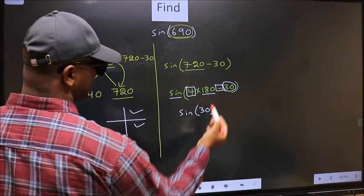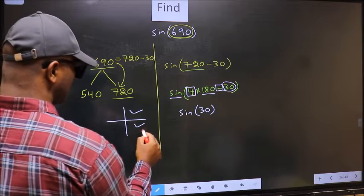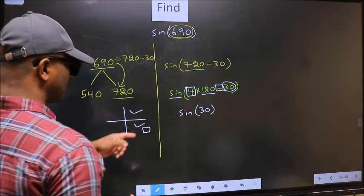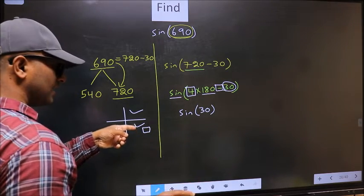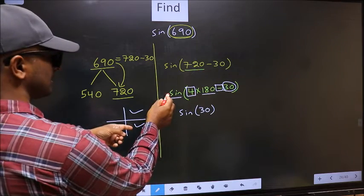Here we have negative. That means the angle lies in the 4th quadrant. And in the 4th quadrant, sin is negative.